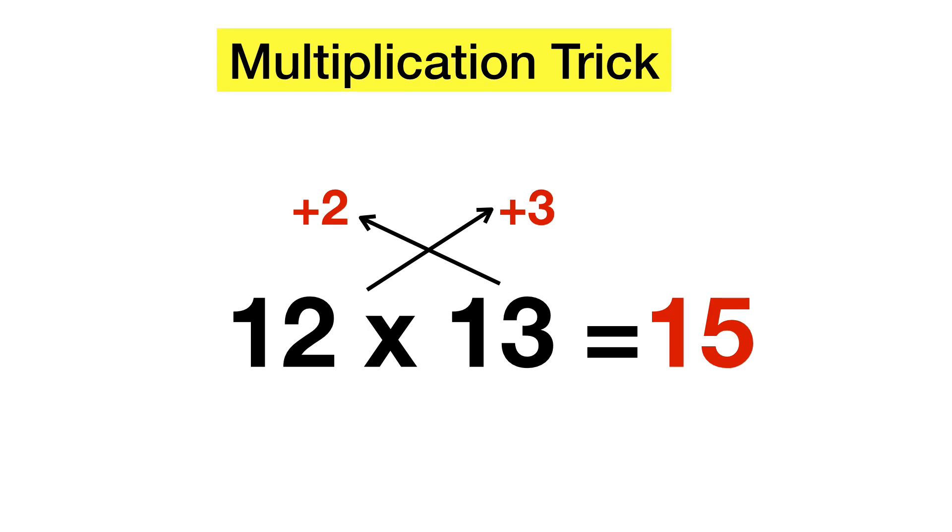The way that we get the second part of our answer is by taking these two numbers we have at the top, the differences, 2 and 3, and multiplying them together. In this case, we have 2 times 3, which is 6. And 6 is the last part of our answer.